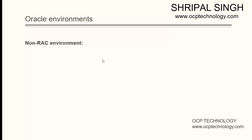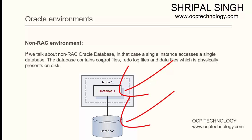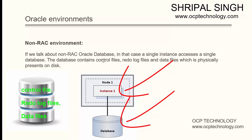We have two types of environments: non-RAC environment and RAC environment. In the non-RAC environment, a single instance accesses a single database. That database contains control files, redo log files, and data files which are physically present on the disk. So in a non-RAC environment, a single instance accesses only a single database.